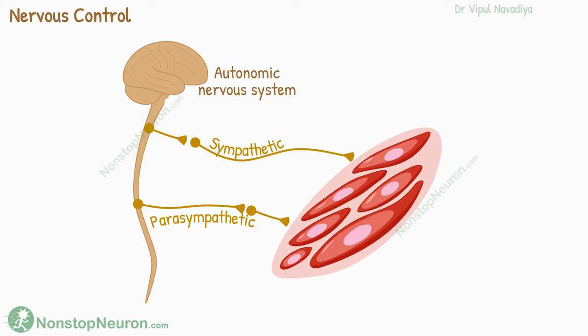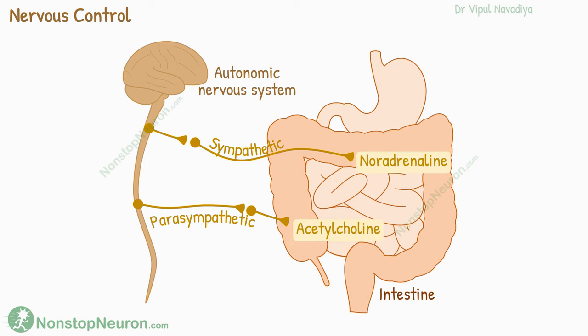When it comes to neurotransmitters, generally the parasympathetic nerves release acetylcholine, while the sympathetic nerves release noradrenaline. An example of nervous control is parasympathetic stimulation of the intestines, which increases intestinal motility. So that was about neuronal control.